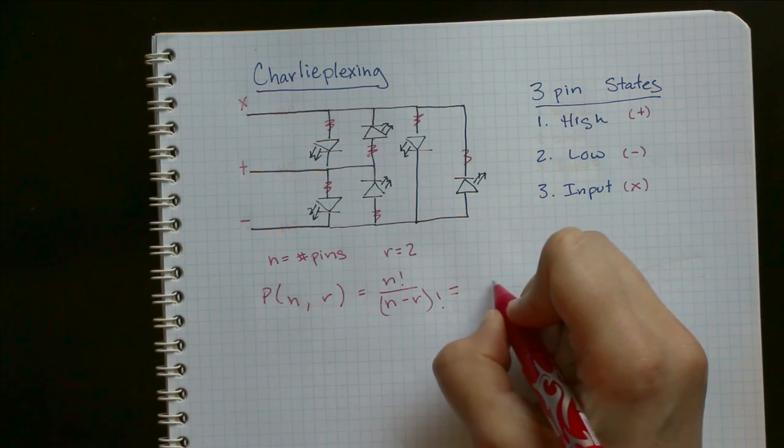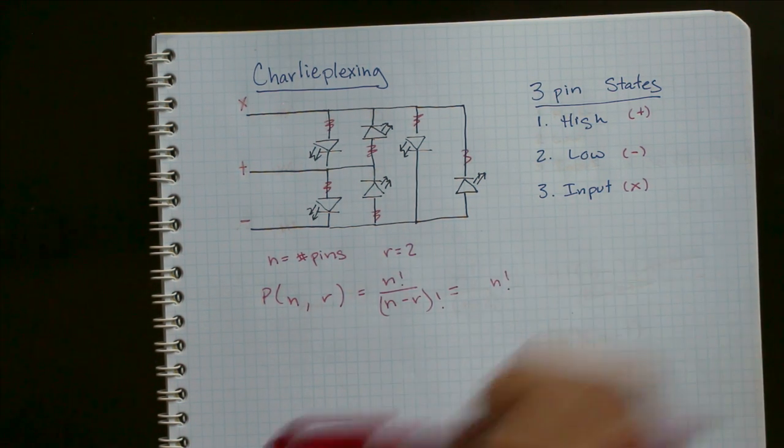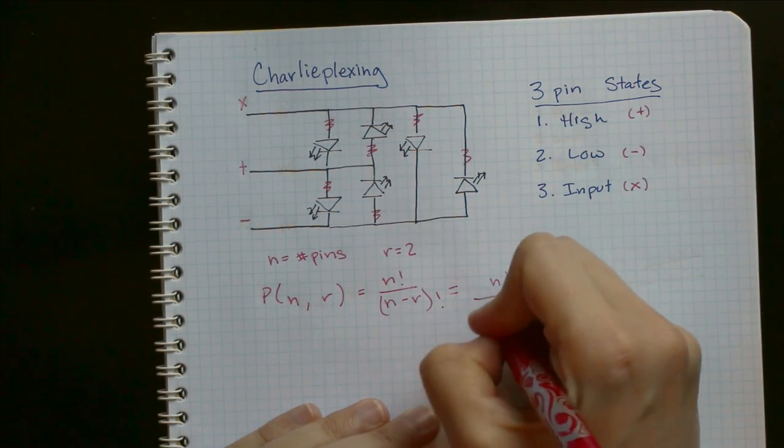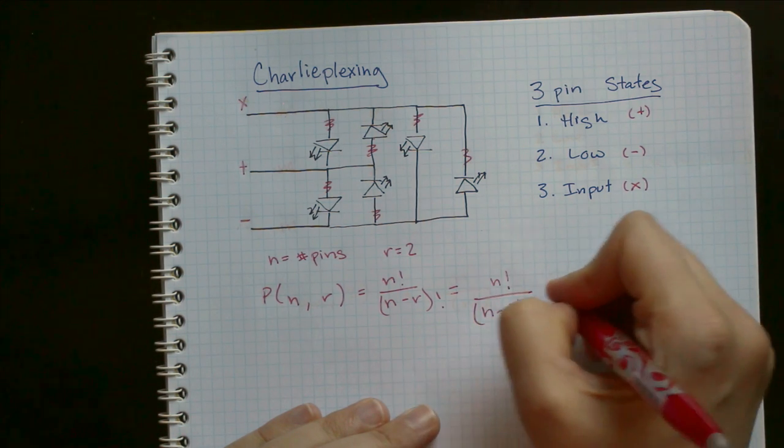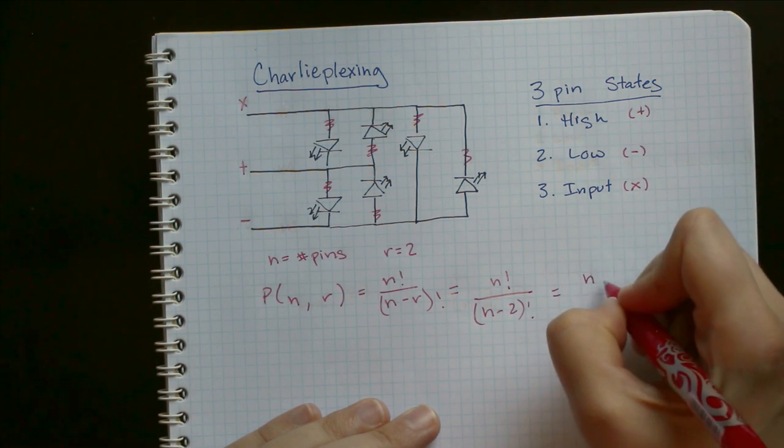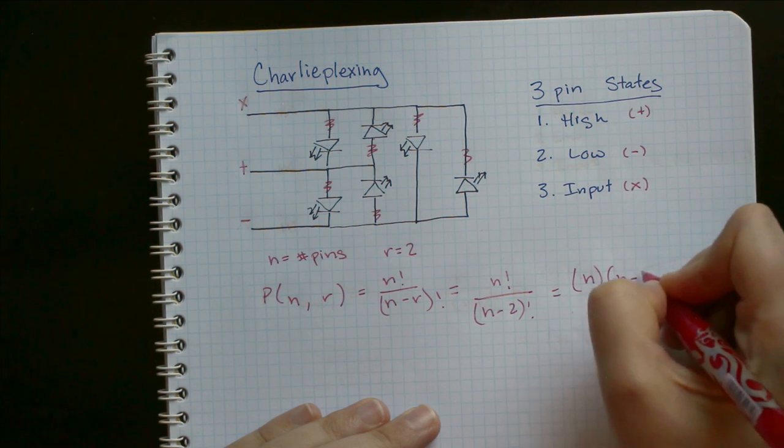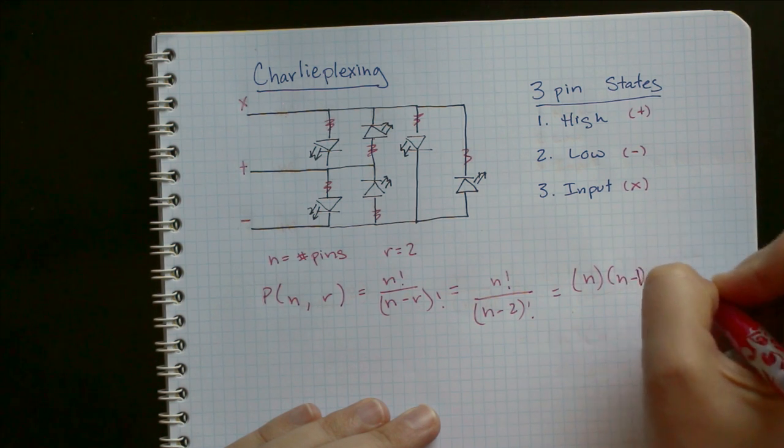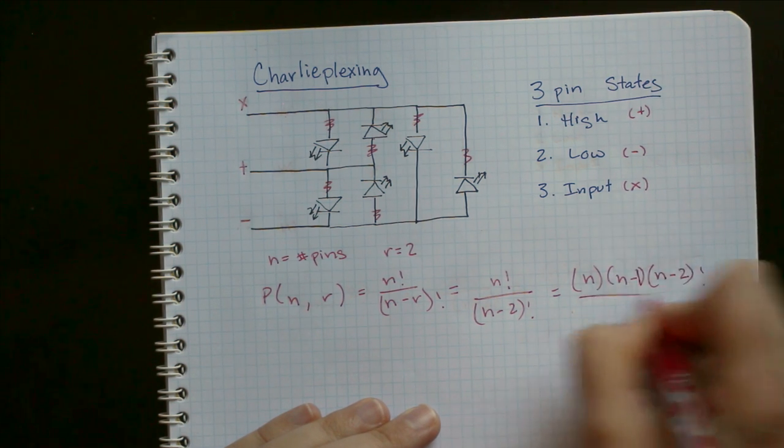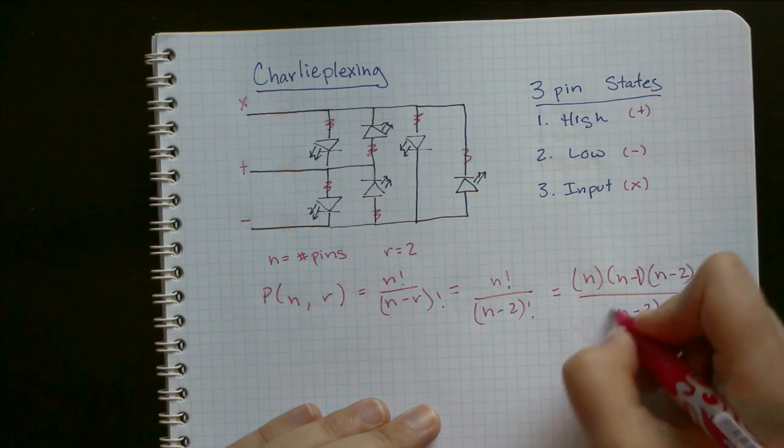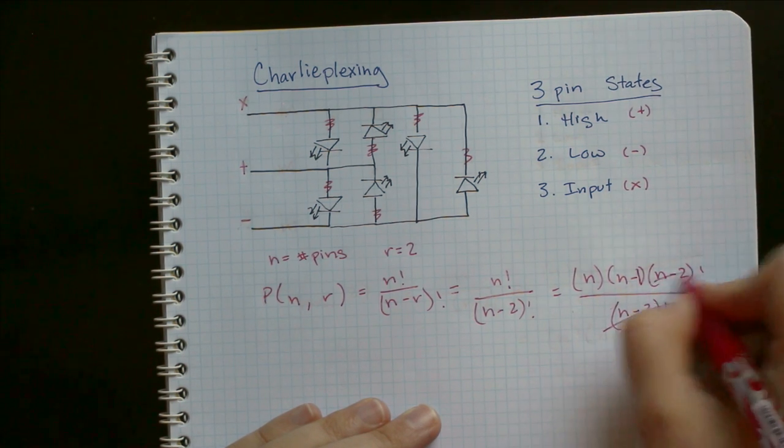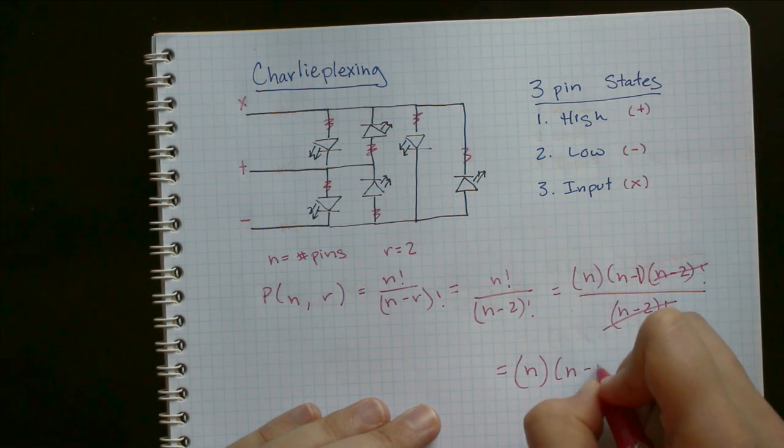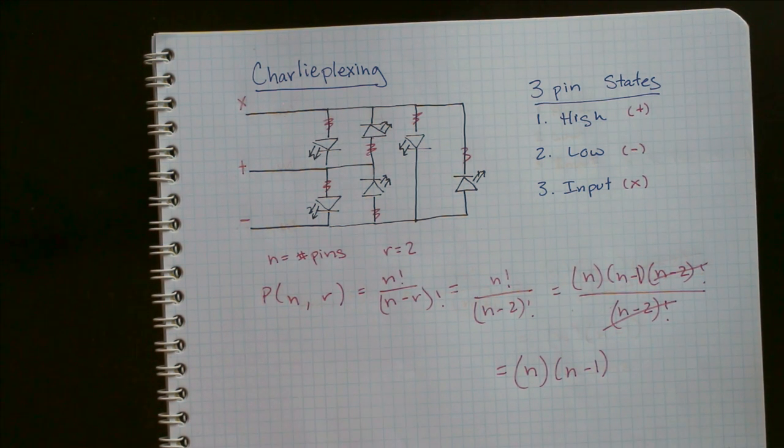So that equation simplifies to... well, actually it becomes n factorial over n minus 2 factorial, and these cancel. So it always equals n times n minus 1, where n is your number of pins.